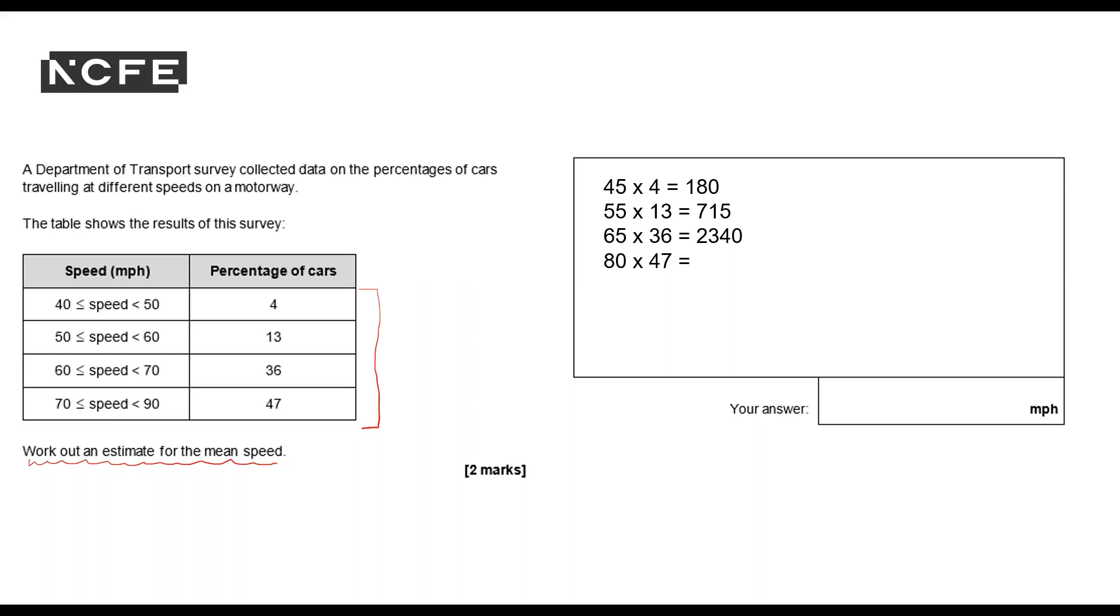80 times 47, so clear. 80 times 47 equals 3,760.